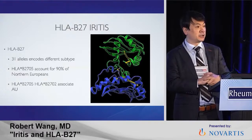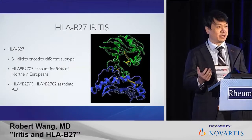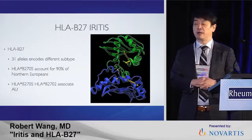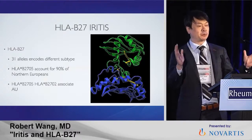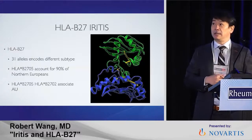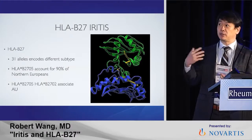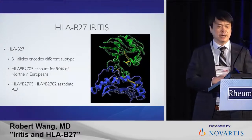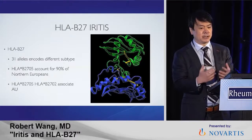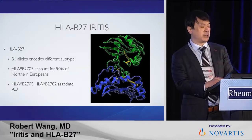I tell the residents: if I'm giving you a pimp question in the clinic and you have to take a guess, you get a 50-50 chance that I'm asking you about HLA-B27. So out of that group of anterior uveitis, half of those are HLA-B27 positive. HLA-B27 encodes for 3-in-1 alleles. There are some subtypes more commonly found in North Europeans, and for eye disease, subtypes 05 and 02 are associated with anterior uveitis.